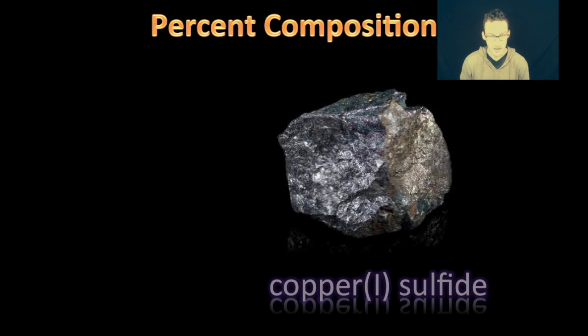The question then becomes, what happens when those things are not made out of just one element? Like, I don't know, compounds. What percent of this compound is copper? And what percent of this compound is sulfur? I don't know. How are we going to figure that out?